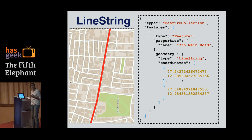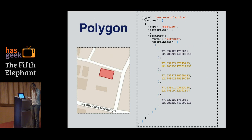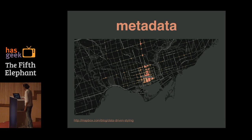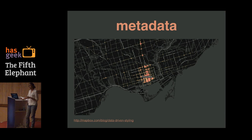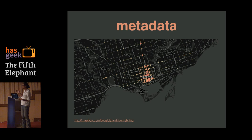A line string looks very similar to a point, except that the geometry is of a type 'line string' and you have more coordinates than you would in a point. A polygon looks very similar to a line string, but it has even more points, and the first point and the last point are the same. Metadata is basically any data that you want to associate with a feature that's not related to its geometry. On OpenStreetMap this could typically be the name of the person who edited that feature last, or the timestamp of when that feature was edited. But more importantly, you can have visual metadata — properties like color, size, and opacity.